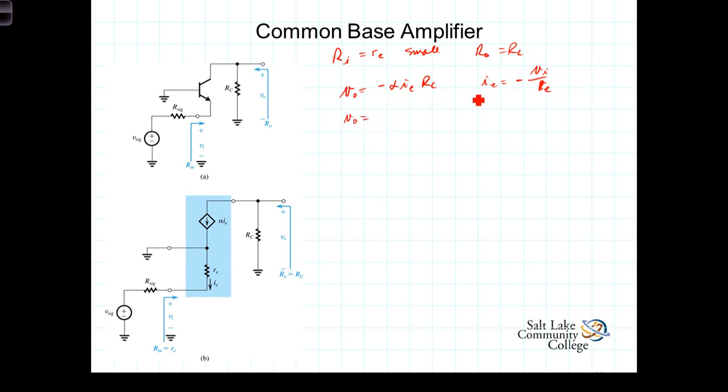So substituting this in, we get V-out equals negative times negative which is positive, alpha times V-in over R-sub-E times R-sub-C. So A-sub-V equals alpha R-sub-C over R-sub-E, so we get that the open circuit gain equals G-sub-M times R-sub-C. And other than the fact that this is non-inverting, this is the same open circuit voltage gain that we saw with the common emitter. So the open circuit gain is still quite respectable.